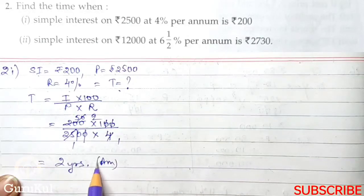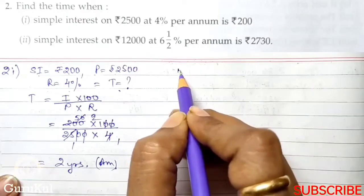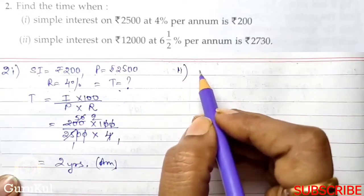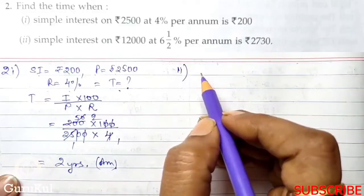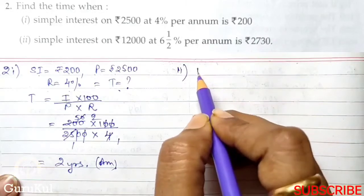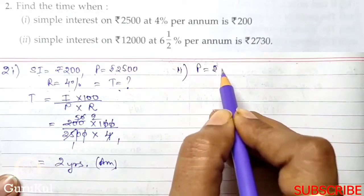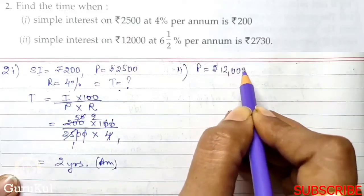So this is our answer. Second part, again we need to find the time when simple interest on Rs. 12,000. So principle is Rs. 12,000.